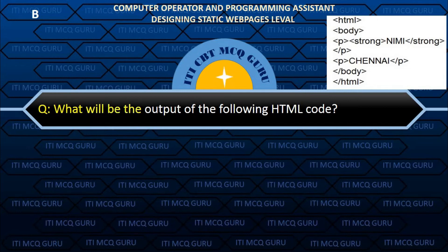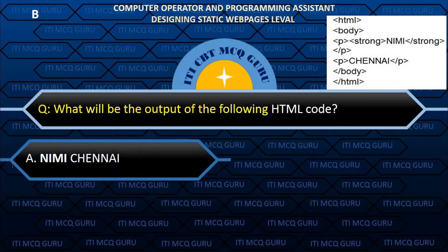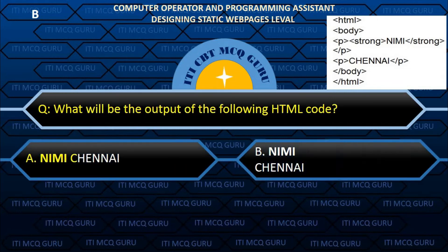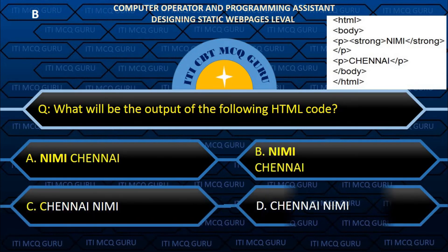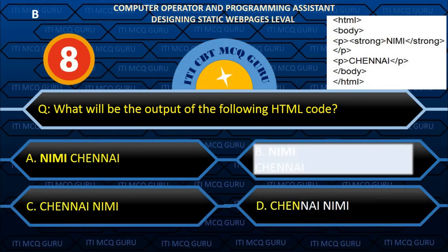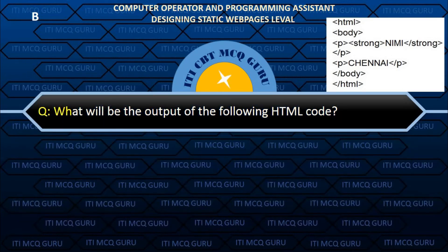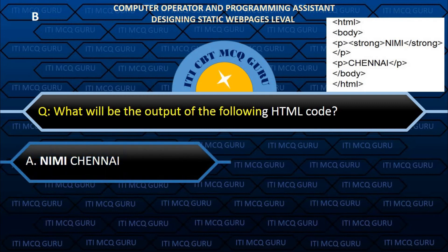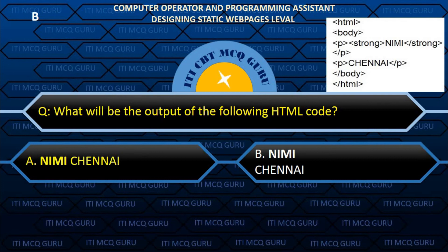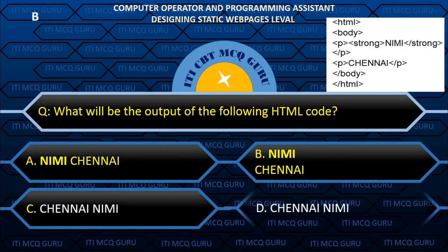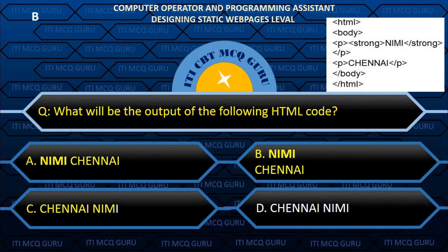What will be the output of the following HTML code? D. Nimi Chennai. What will be the output of the following HTML code? D. Nimi Chennai.